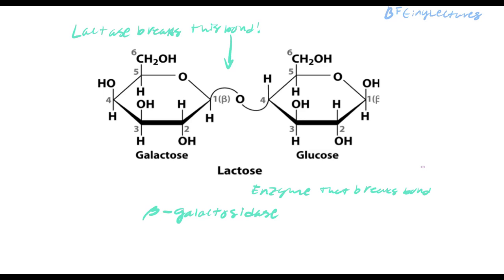Beta-galactosidase is the enzyme used in industrial purposes for lactose-free products. To remember the structure: lactose uses a beta glycosidic bond, therefore it's made from a galactose molecule plus glucose. Galactose plus glucose equals lactose. Some people can't digest it, confirming it must be a beta glycosidic bond. Don't memorize the shape — memorize the components.